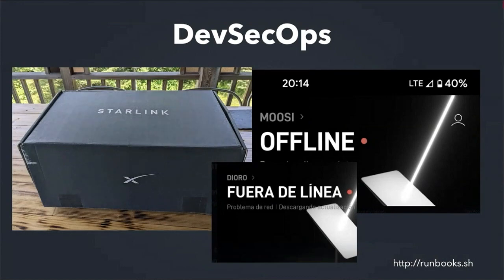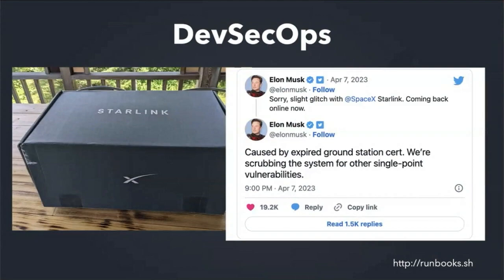Imagine my surprise when a day later a friend sent me a tweet: they forgot to renew their certs. And when they forgot to renew their certs, they took down all of Starlink — everybody lost their internet. We don't want this to happen. If we can automate the idea of renewing our certificates, we can prevent an outage like this from happening.